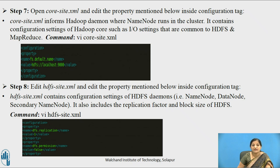Then we edit hdfs-site.xml. We edit the property mentioned in the configurations tag as shown in the snapshot. This file contains configuration settings of HDFS daemons — that is, NameNode, DataNode, and Secondary NameNode. It also includes the replication factor and block size of HDFS.